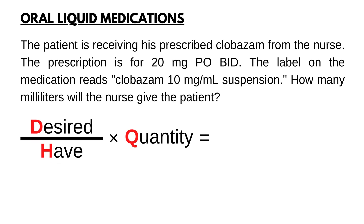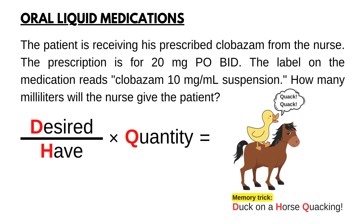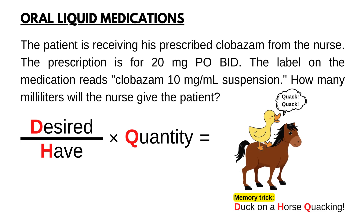Desired is the dose that the provider ordered to the patient. Have is what you have on hand, and quantity will probably be in capsules, tablets, or milliliters. There is a memory trick to remember this formula — just imagine a duck on a horse quacking.